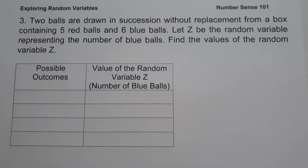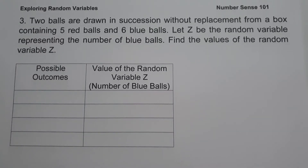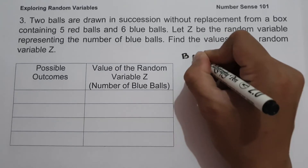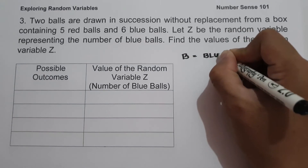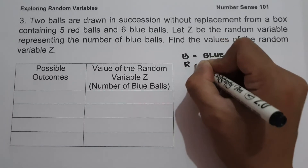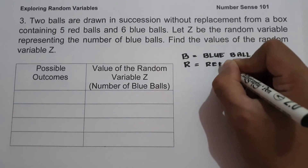On Example 3, two balls are drawn in succession without replacement from a box containing 5 red balls and 6 blue balls. Let Z be the random variable representing the number of blue balls. Find the values of the random variable Z. Let us represent B as blue ball and R as red ball, and illustrate the sample space.